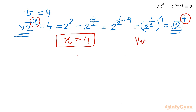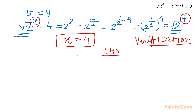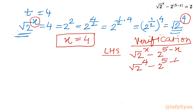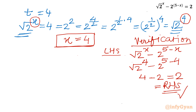Let's verify this value. Starting with LHS: root 2 to the power x minus 2 to the power 5 minus x. Substituting x equals 4: root 2 to the power 4 is 4, minus 2 to the power 5 minus 4, which is 2 to the power 1, equal to 2. So LHS equals 4 minus 2 equals 2, which matches RHS. Hence verified: x equals 4 is the only real solution.